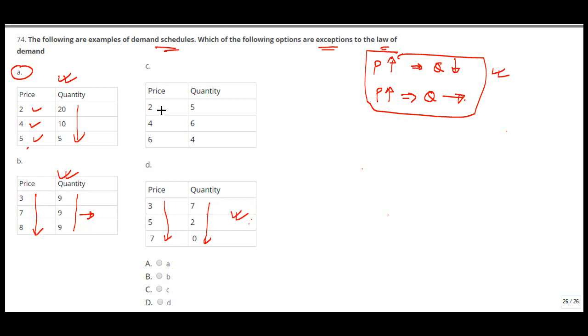But if you see this option, the price is increasing and the quantity has increased. So this is usually for the normal good we do not see. And then you see here the price is again increasing and the quantity is not decreasing. So it is showing erratic behavior - initially price increases, quantity increases, and then quantity decreases. So this can be said as an exception to the law of demand.